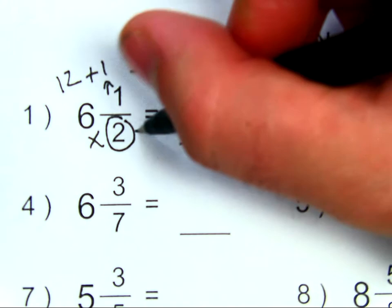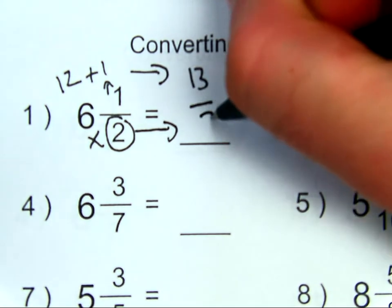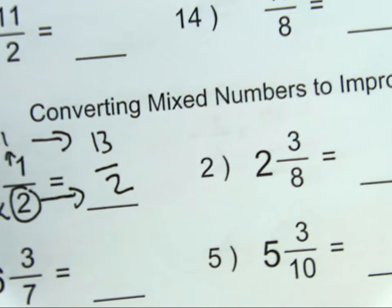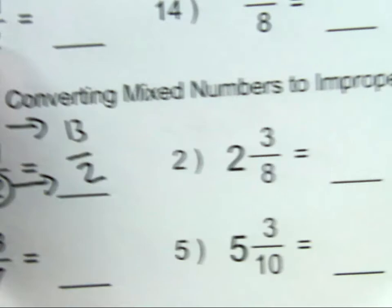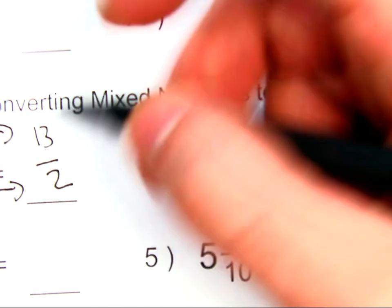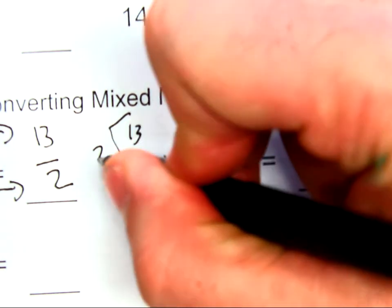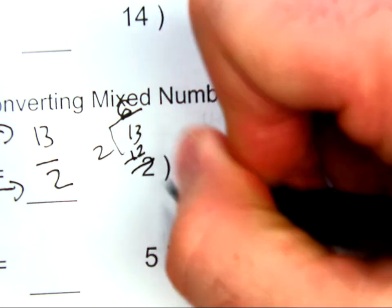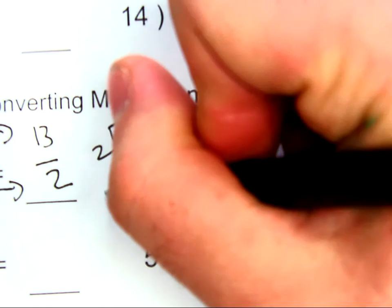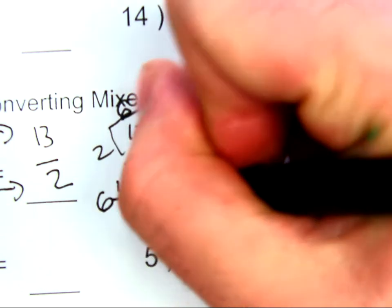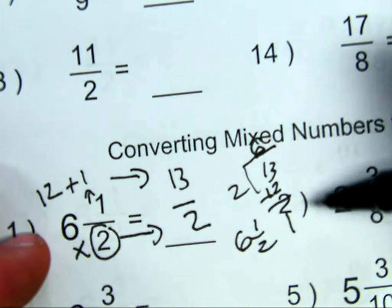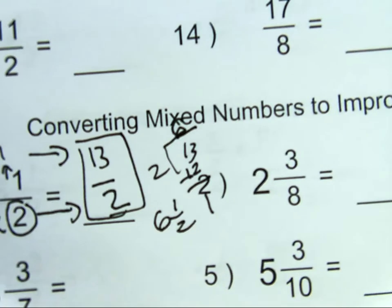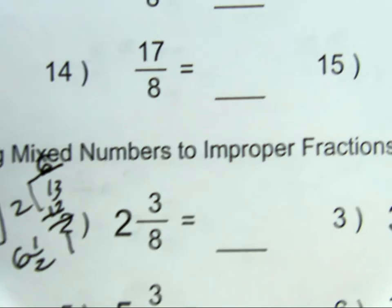Now, this denominator always stays the same. It's going to become 2. 13 over 2. If I wanted to check to make sure I was right, I could just undo the whole thing and check it. 2 goes into 13. I'll do 13 divided by 2. It goes in 6 times. 6 times 2 is 12. Subtract that, I get 1. My mixed number should be 6 and 1 half. So, these match. My check matches. My final answer is 13 halves, or 13 over 2.